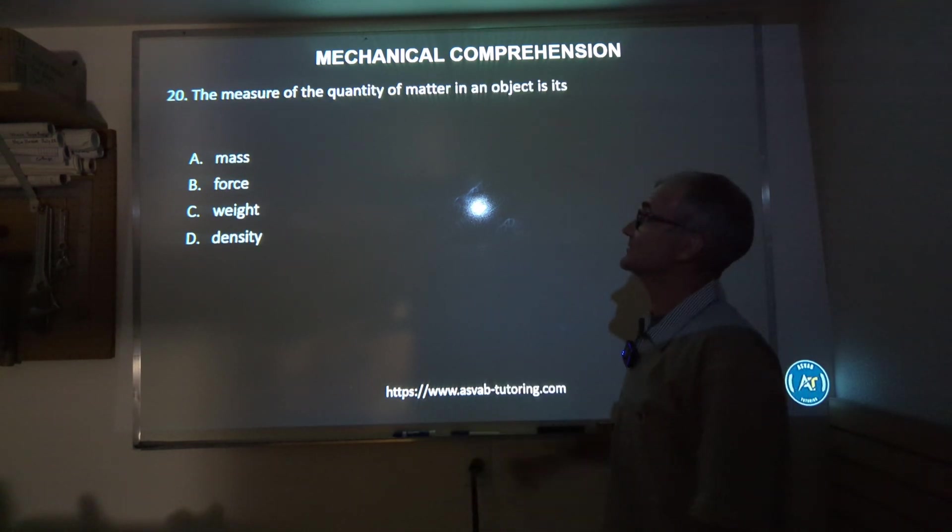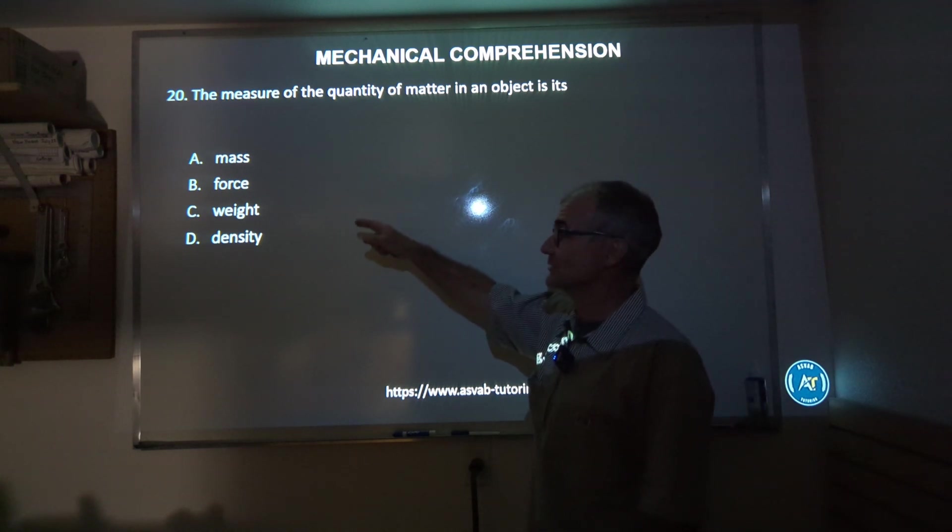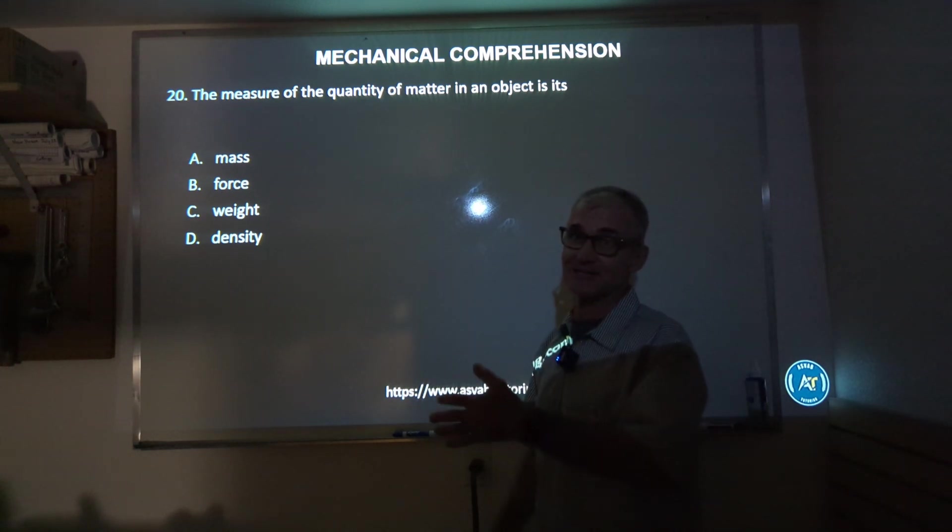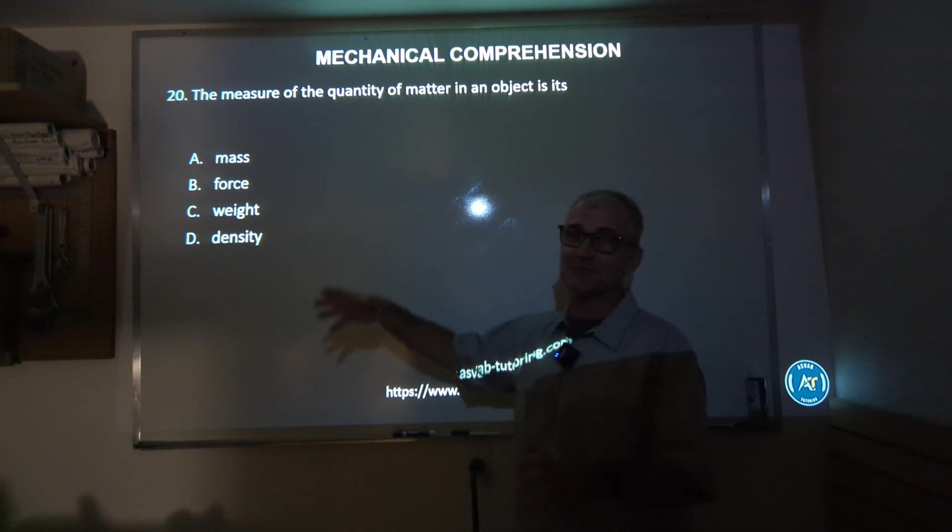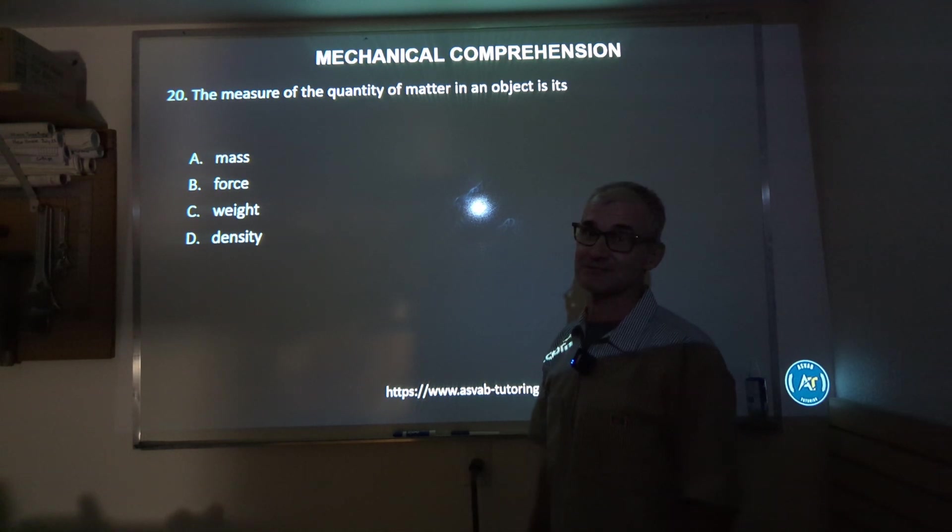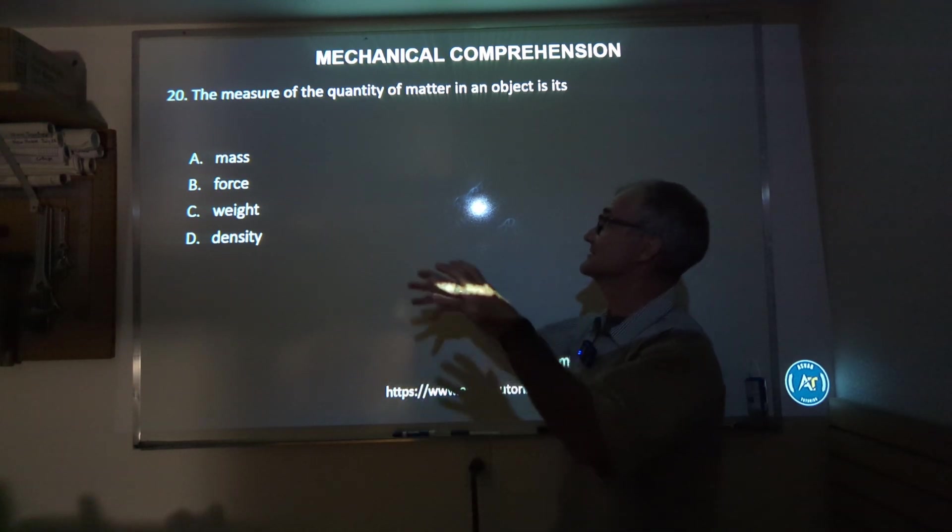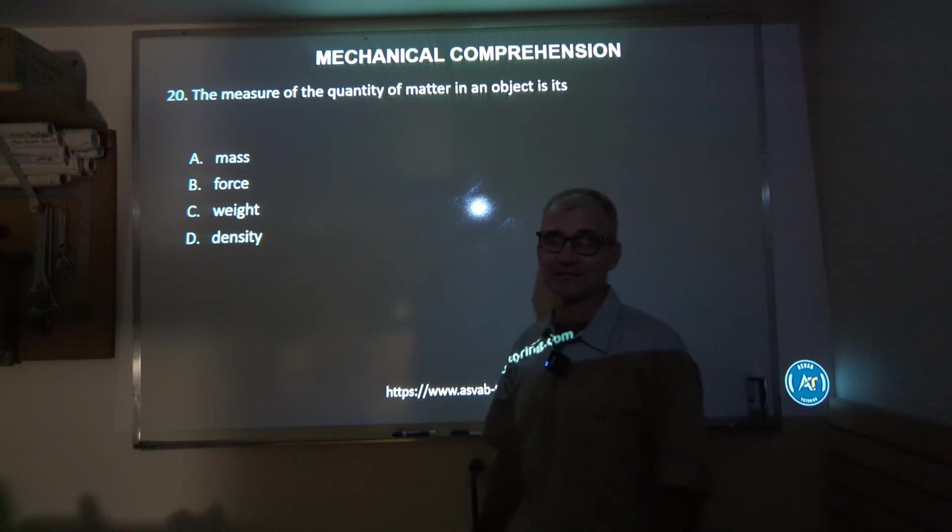Number 20: the measure of the quantity of matter in an object is its mass, force, weight, or density. Again, hopefully you've been pausing the videos and doing these problems before I do them. Correct answer is A, mass, another vocab problem, really understanding vocabulary. Mass is the overall quantity of matter in an object.